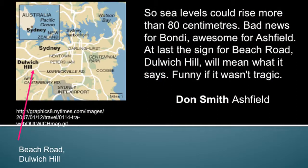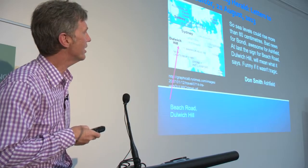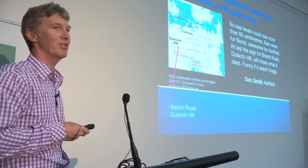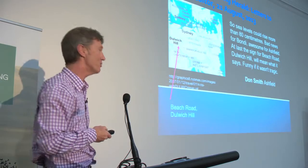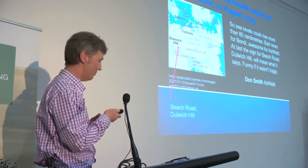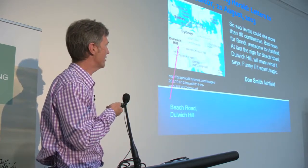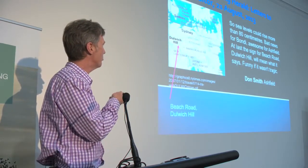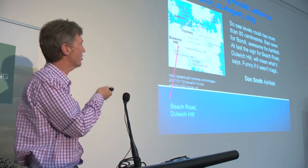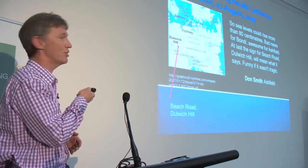At the same time, there was the sea level rise of more than 80 centimetres — bad news for Bondi. And Ashfield, near Dulwich Hill, some 13 kilometres from the coast — at last, the sign for Beach Road, Dulwich Hill will mean what it says. But it's nowhere near the beach. Funny if it wasn't tragic. That area is not likely to flood with an 80 centimetre rise. But imagine some of the other projections — a 10-metre sea level rise — and many low-lying areas like Sydney Airport and the city centre would be in a lot more trouble before Dulwich Hill ends up being flooded.